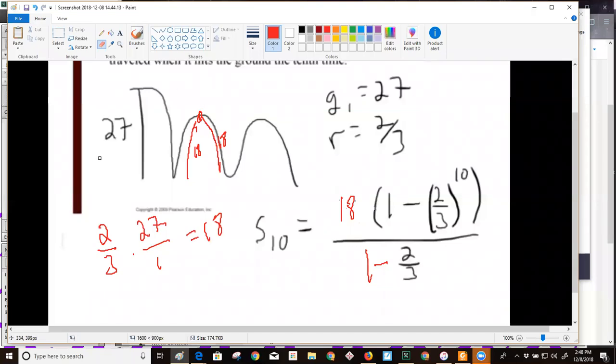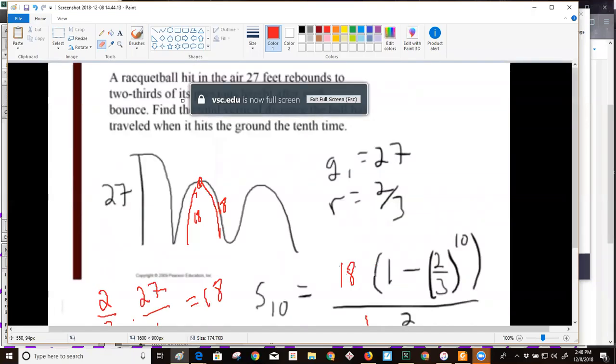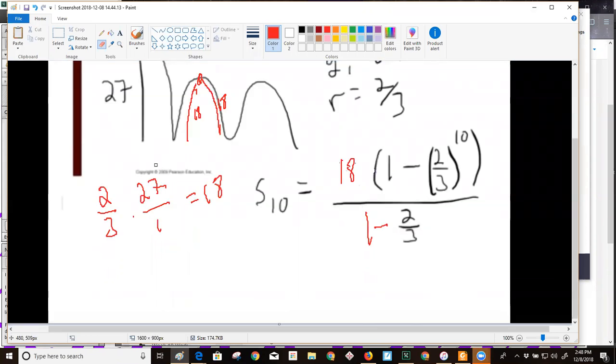Okay, so this racquetball problem actually has a couple of issues to it. One mistake that you pointed out was that I didn't use one minus the common ratio in the denominator. That is a mistake, and then we're trying to figure out the total distance this ball traveled.